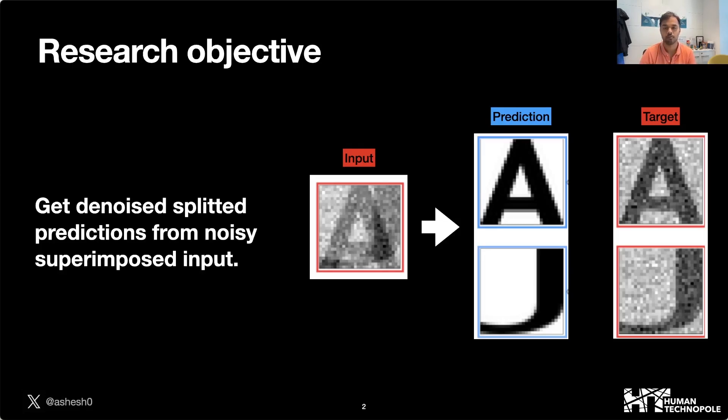In this example, the input is a superposition of two images: the image of noisy A and the image of noisy J. From that input, we want to get the clean images of the characters A and J respectively.